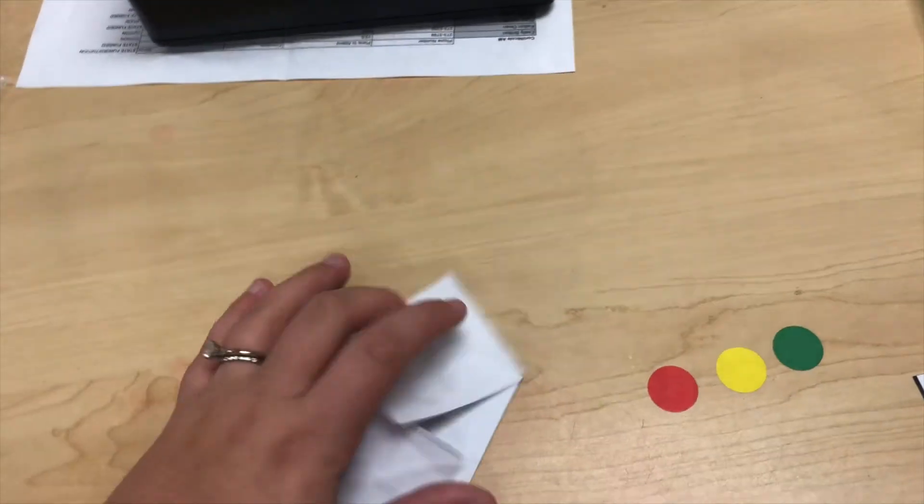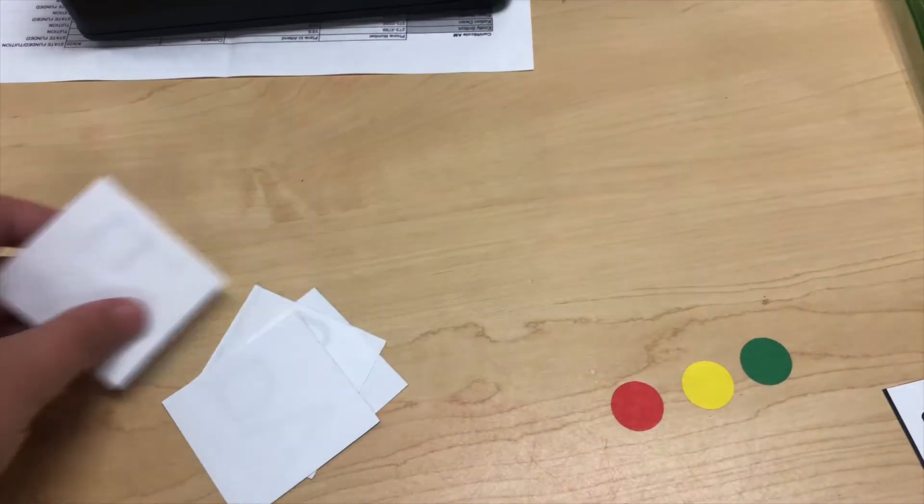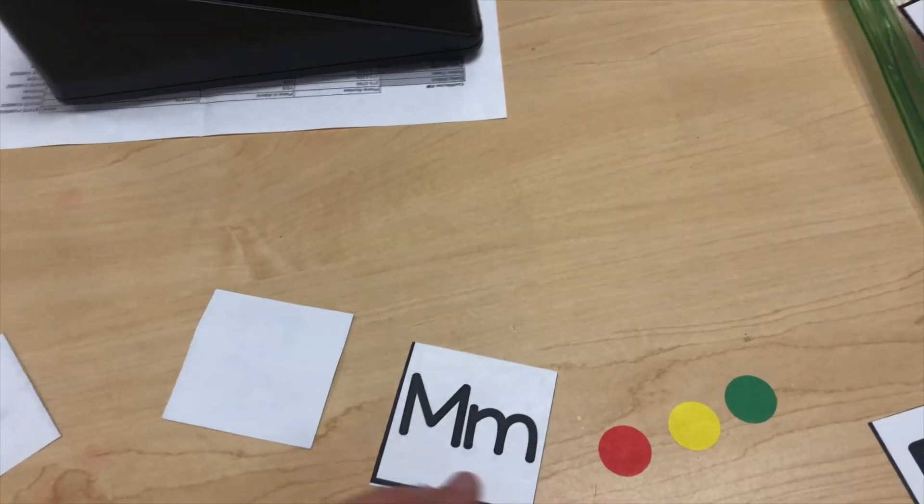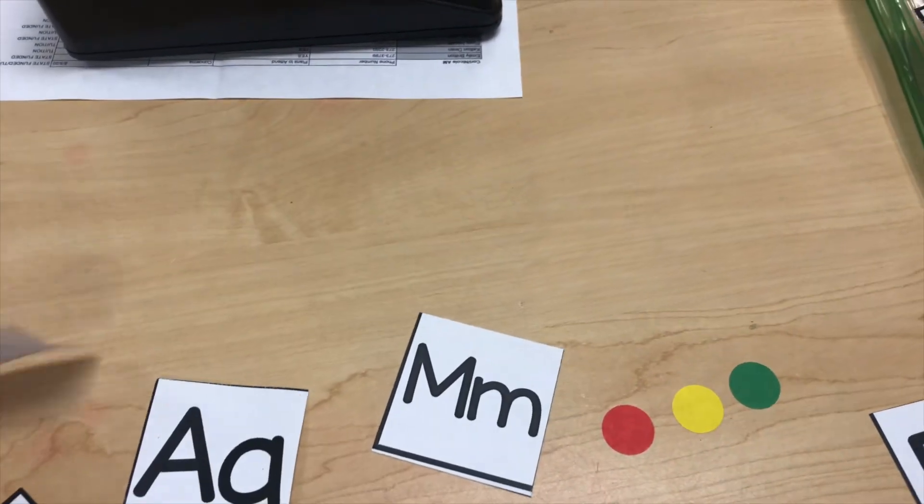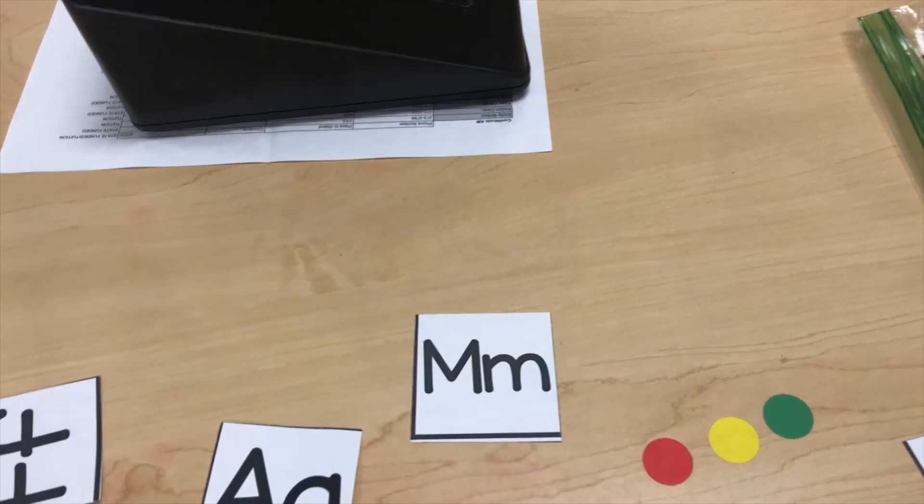And that's always an easy review activity. But grab your M and your K and practice finding the M and the K mixed up in the pile. Either way, you can have them turned over. All right, and say, point to the letter M. Good job. What sound does it make? Mmm, great job.